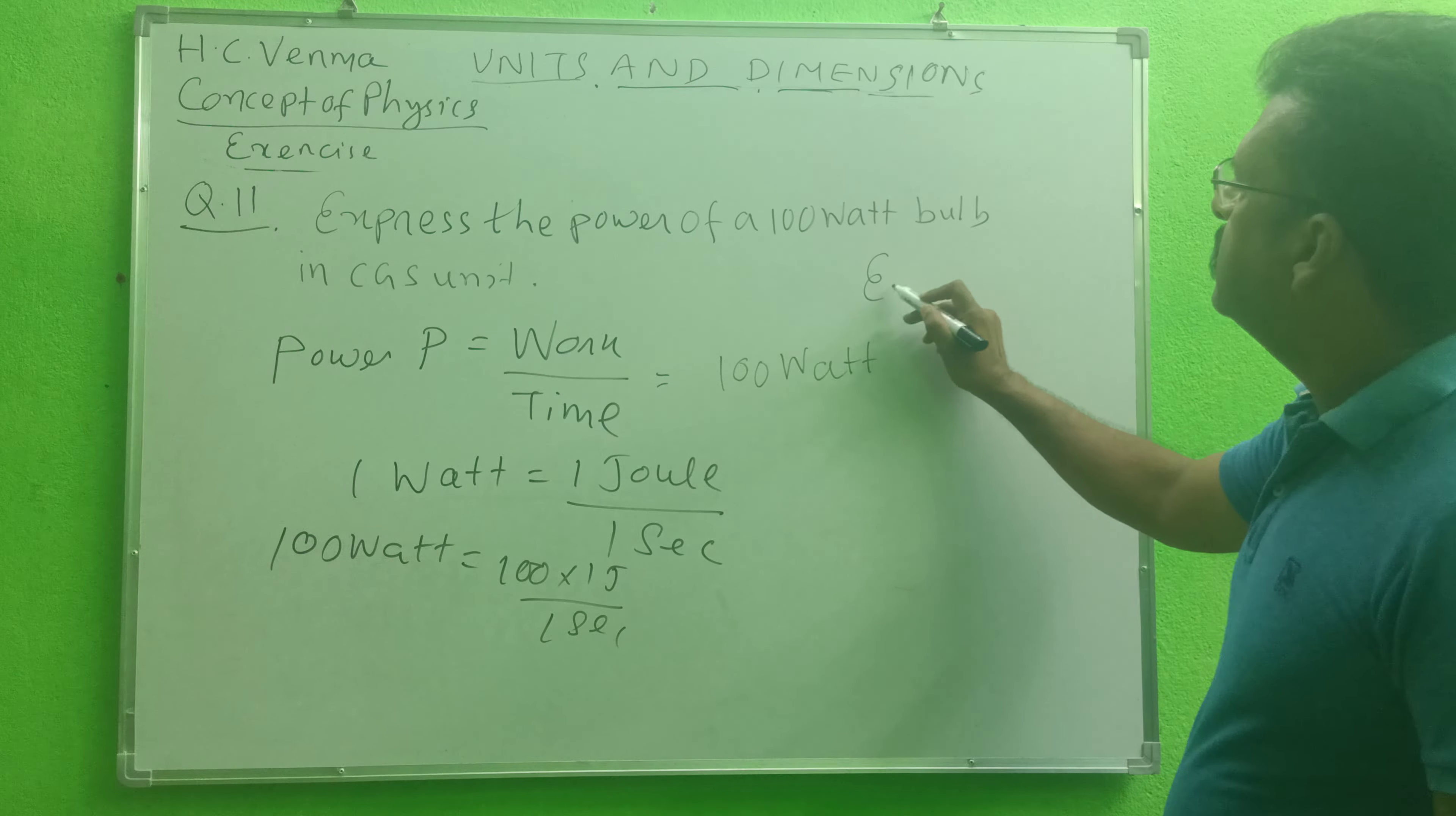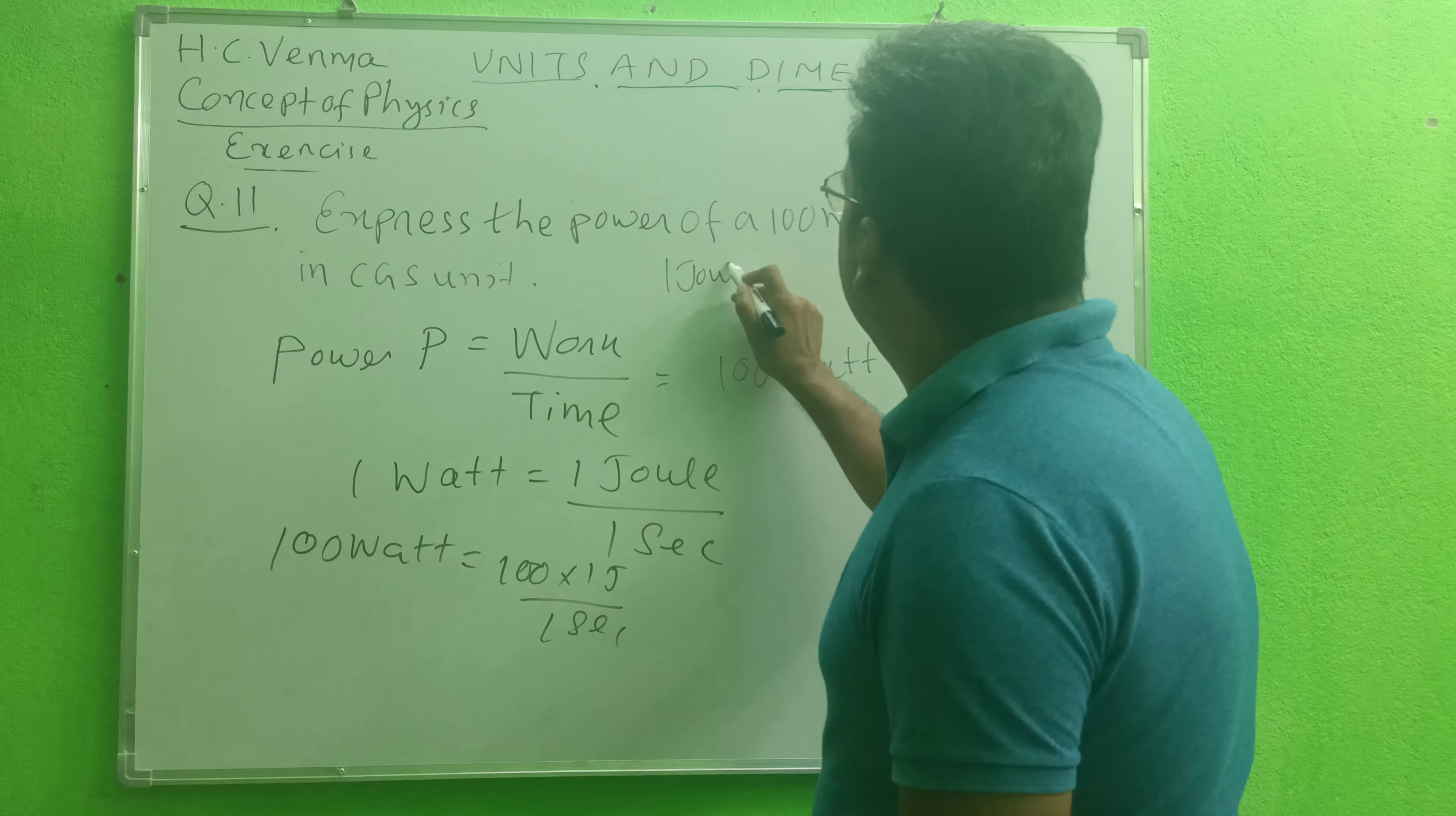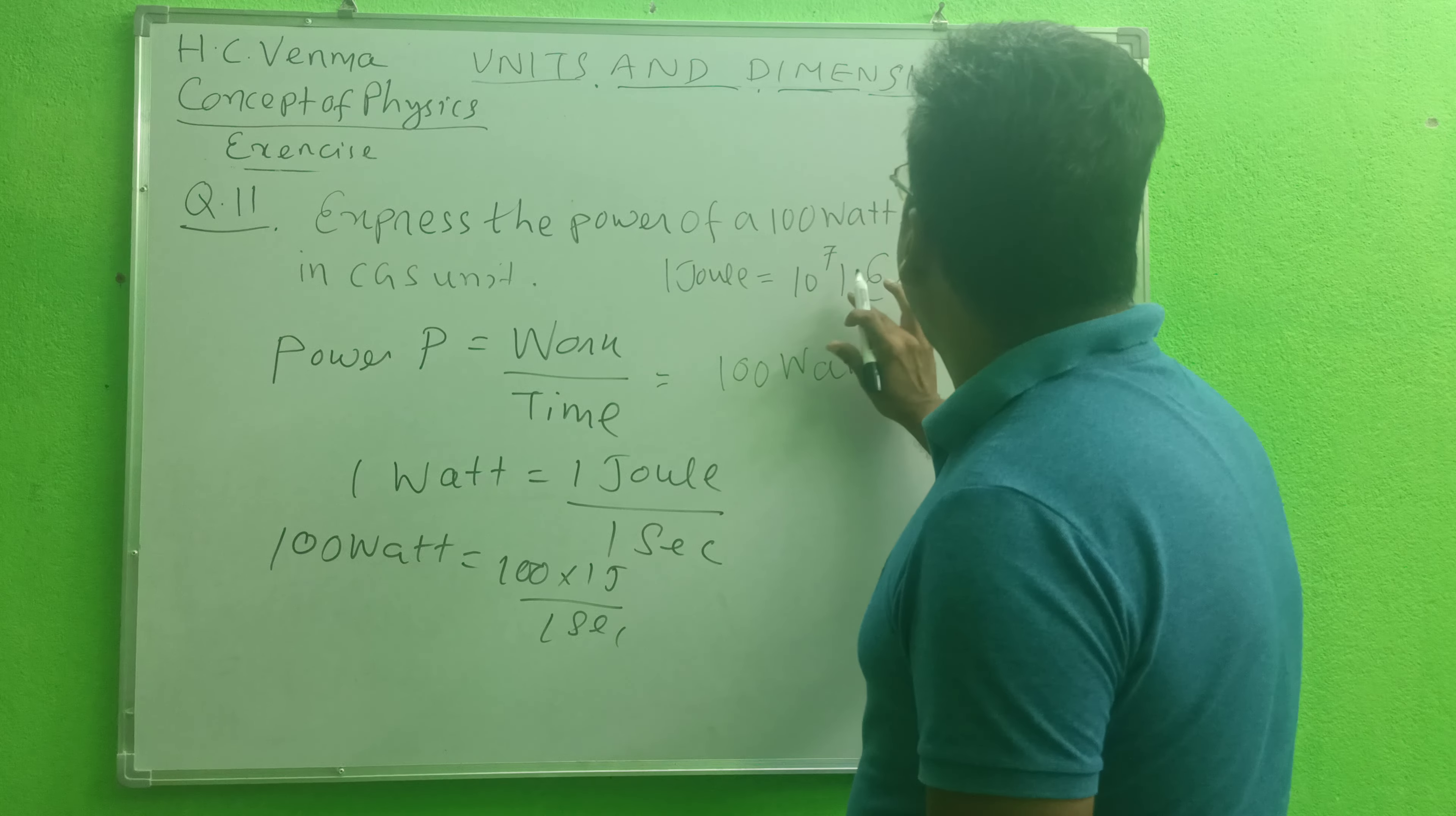And what is the SI unit of work, student? You know, SI unit of work is erg, and what is the relationship between 1 joule and 1 erg? You know, 1 joule is equal to 10 to the power 7 ergs.